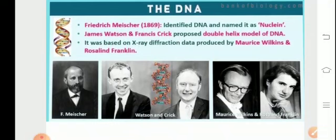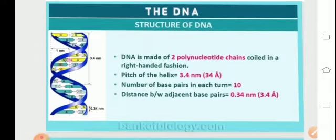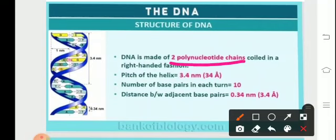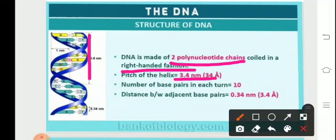Frederick Miescher in 1869 identified DNA and named it 'nuclein.' James Watson and Francis Crick proposed the double helical model of DNA, based on X-ray diffraction data produced by Morris Wilkins and Rosalind Franklin. By X-ray crystallography, the structure of DNA was determined. It was found that DNA is made up of two polynucleotide chains. In the case of B-DNA, it is a right-handed helix with a pitch of 3.4 nanometers and 10 base pairs per turn.